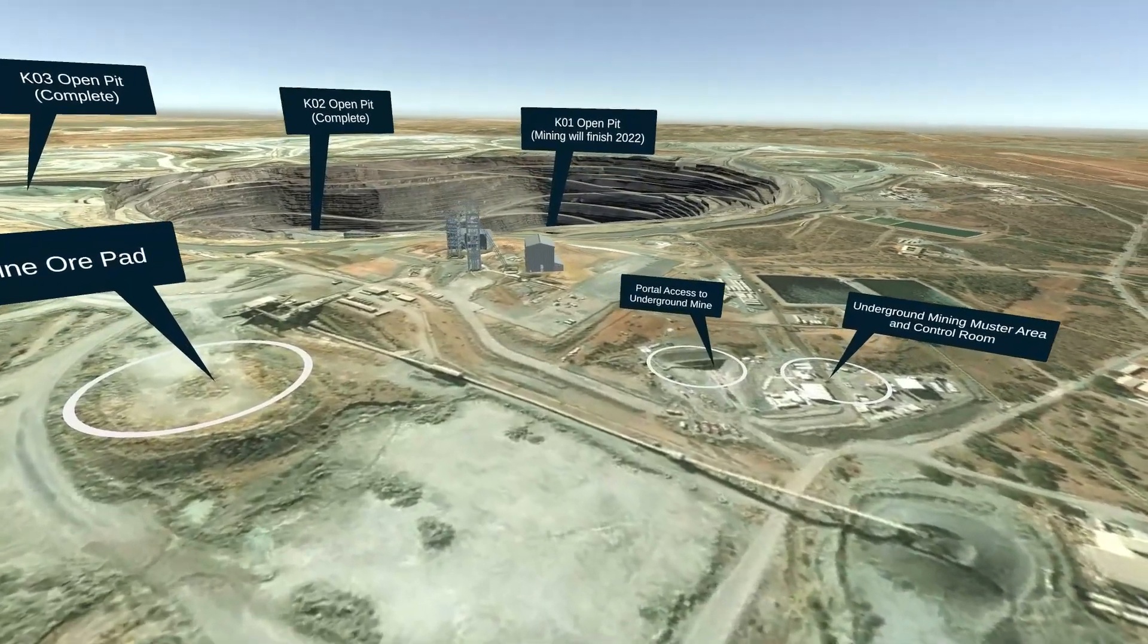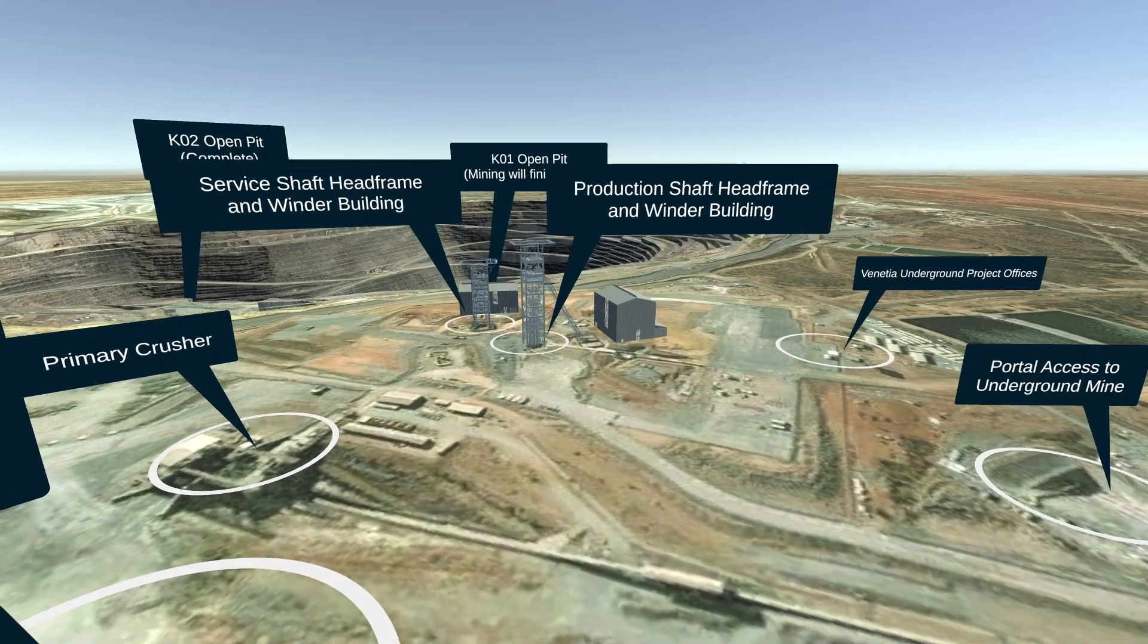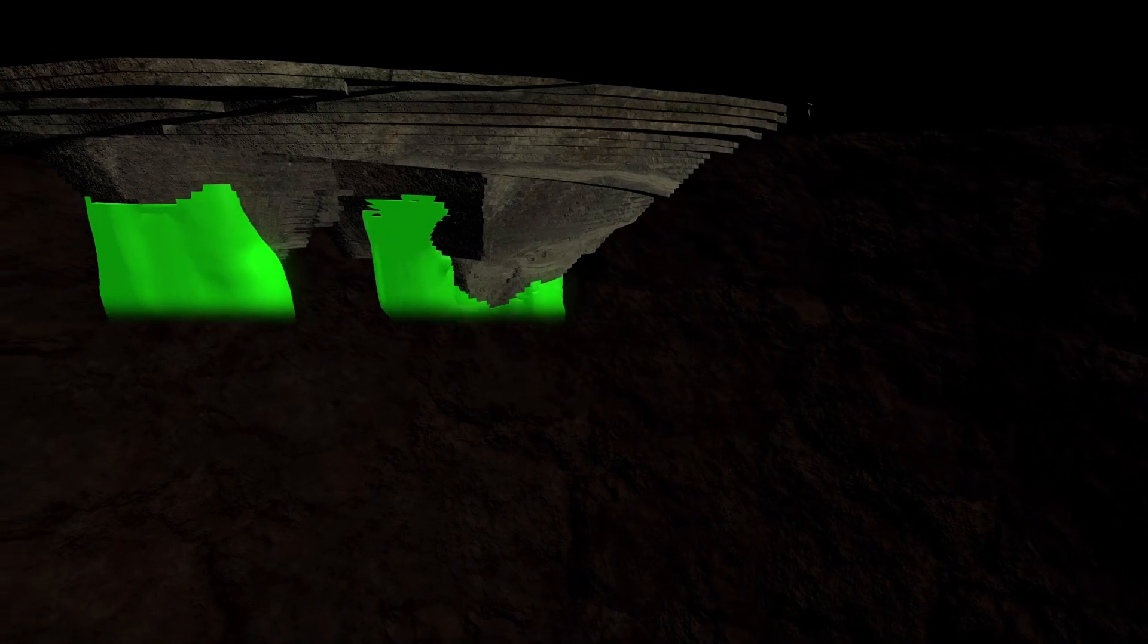The Venetia underground project will enable the K01 and K02 kimberlite pipes to be mined by sublevel cave below the current Venetia open pit.